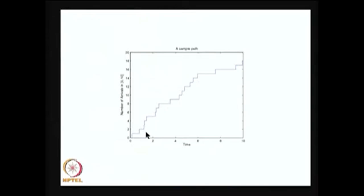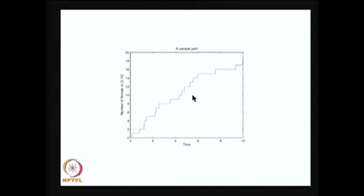Going back to the assumptions used in the derivation of N(t): in a very small interval of time at most one event can take place, and the differences of random variables defined over non-overlapping intervals are independent, and increments are stationary. Those properties cannot be directly visualized in the sample path — this is just one sample path over time.